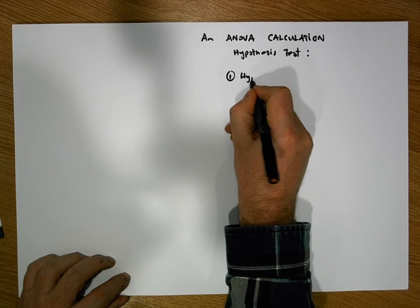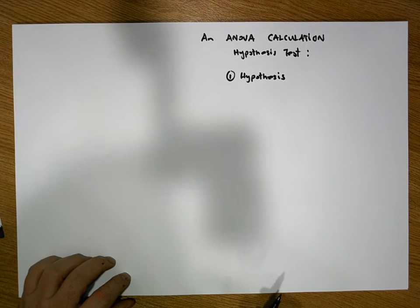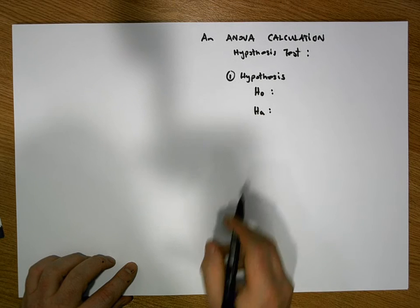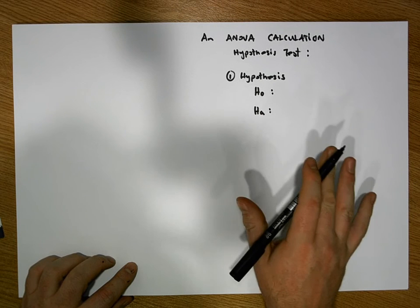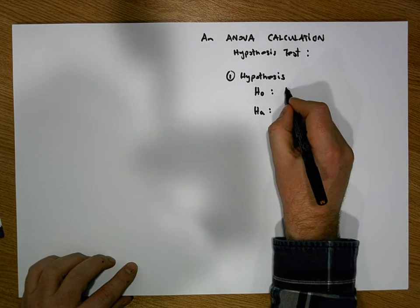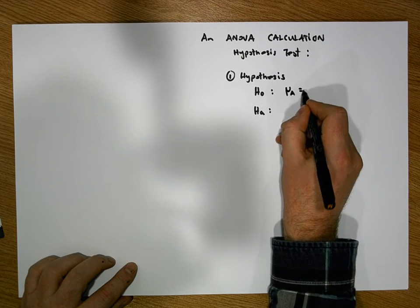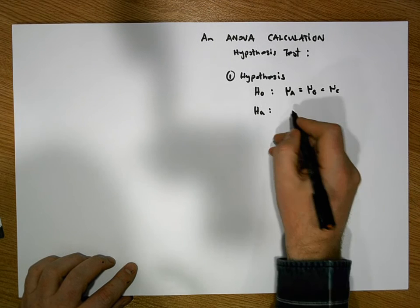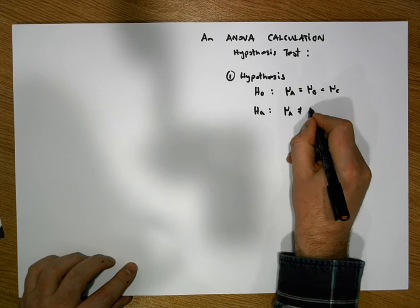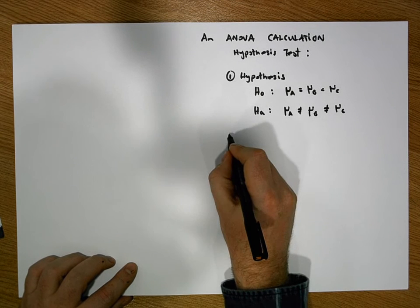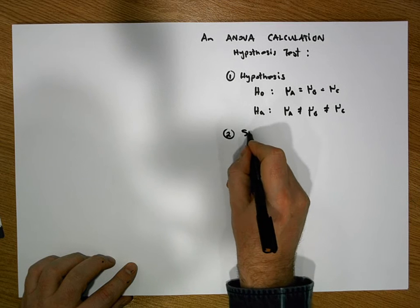Step one is to define the hypothesis. Our hypothesis is a statement about the population parameters — there's a null position and an alternative position. The null position is that there's no difference between the means of the populations the three groups were selected from, so our null hypothesis is that μA equals μB equals μC — that they're all equal. The alternative is that at least one of those is different.